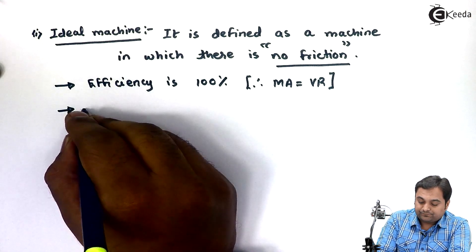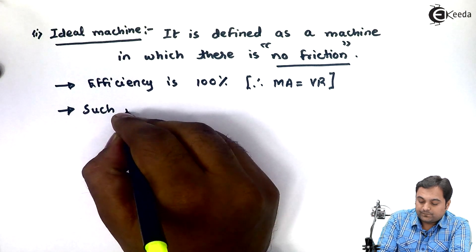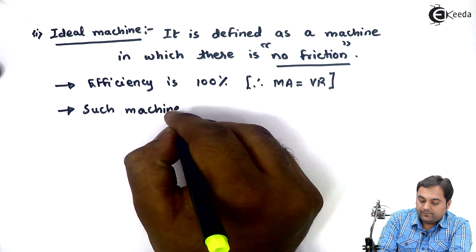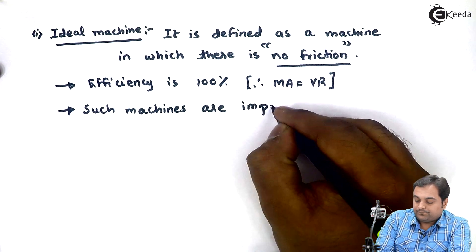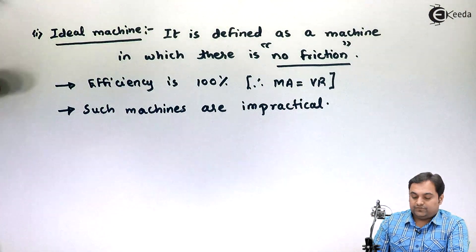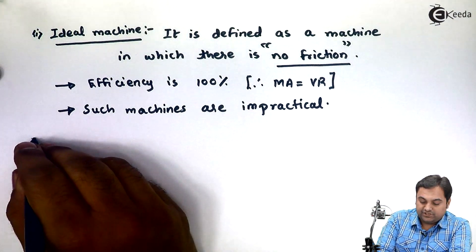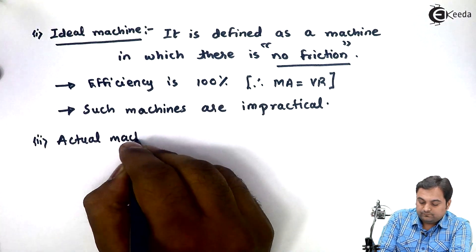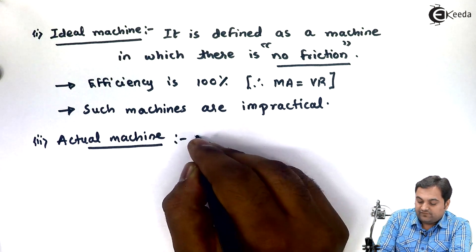Such machines are impractical — we don't have any machines which are ideal, that is 100% efficient. So we can say that such machines are impractical. Next is actual machine.